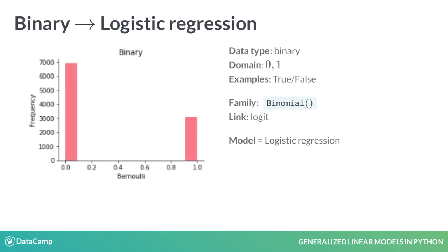Another data type we encounter quite often is binary data — that is, data with two possible classes, which we usually denote as 0 and 1, where 1 is true and 0 is false. To fit a GLM, you should use the Binomial distribution, where the default link function is the logit. Models of this form are called logistic regression, which we will cover in chapters 2 and 4.